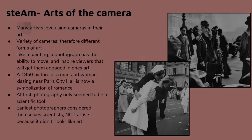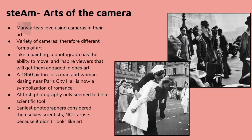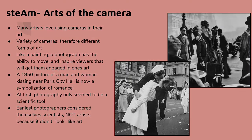Many artists love using cameras in their art. There is a variety of cameras, and therefore different forms of art. Like a painting, a photograph has the ability to move and inspire viewers and engage them in one's art. An example is a 1950s picture of a man and a woman kissing near Paris City Hall, which is now a symbolization of romance. At first, photography only seemed to be a scientific tool — in fact the earliest photographers considered themselves scientists, not artists, because it didn't look like art.